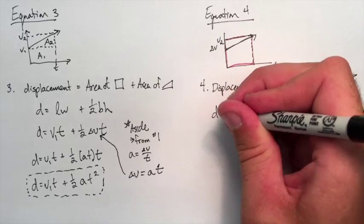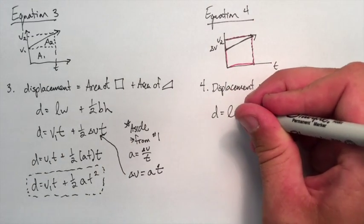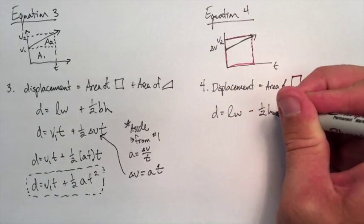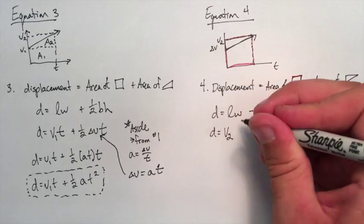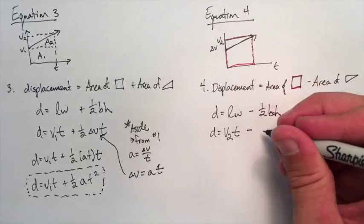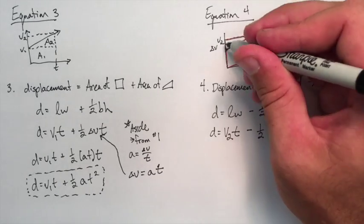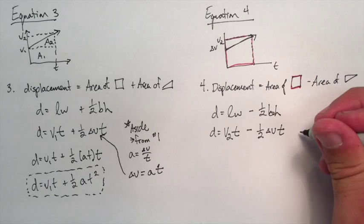So what's left over is the total area underneath the line. Again, rectangle's length times width. Triangle's half times base times height. So that's V2 times T minus half, again, times delta V times T.